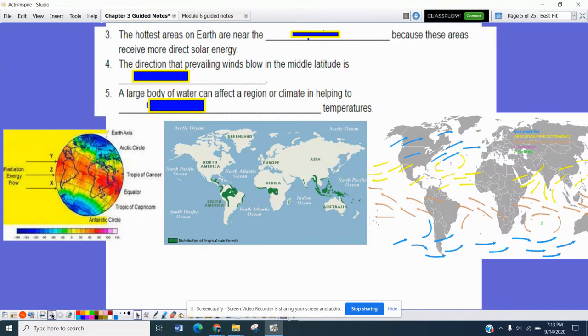Taking a look at number three, the hottest areas on earth are near equator because these areas for the most part are receiving more direct solar energy. The direction that prevailing winds blow in the middle latitudes is actually west or westerly. If you take a look at the map over here, you can kind of see how that works. The United States for the most part would probably be within the middle latitudes and a lot of our weather basically starts in the west and moves eastward.